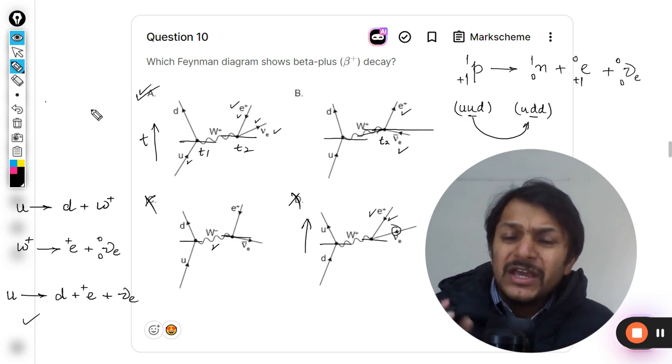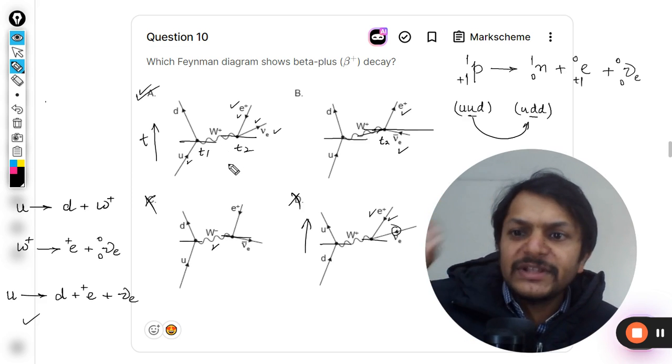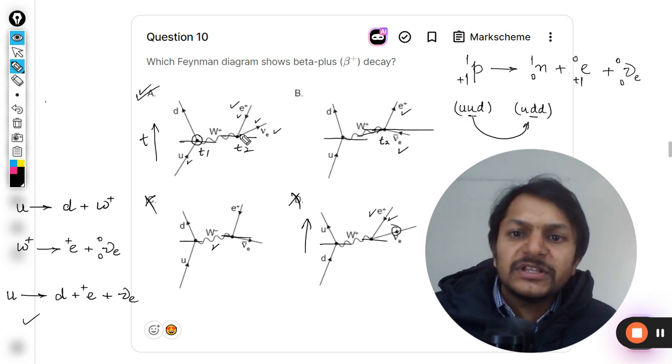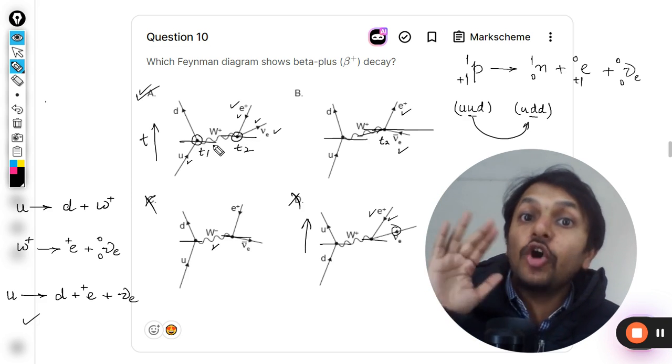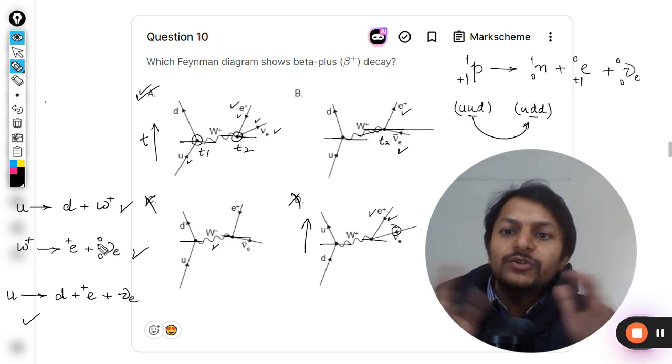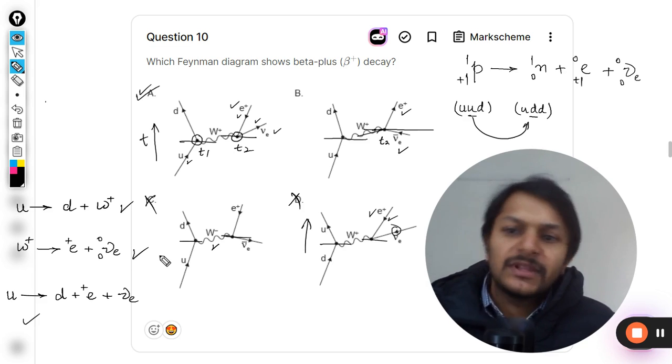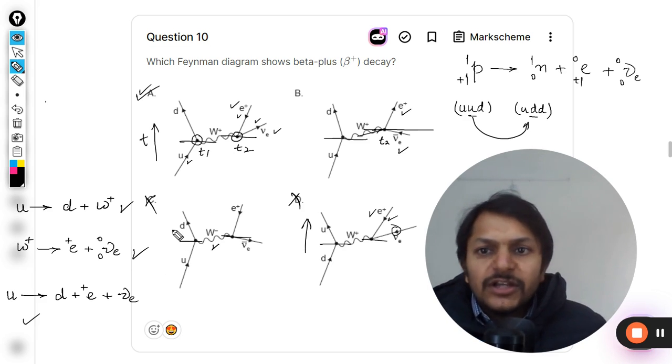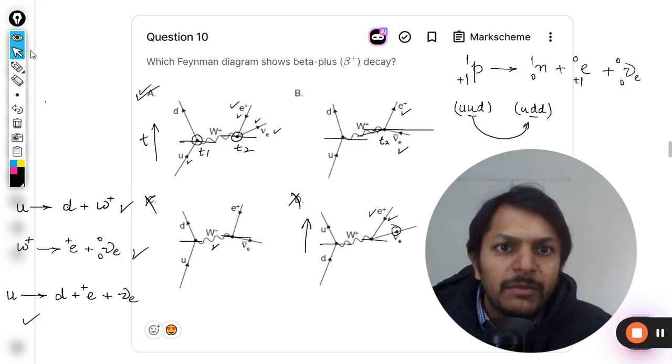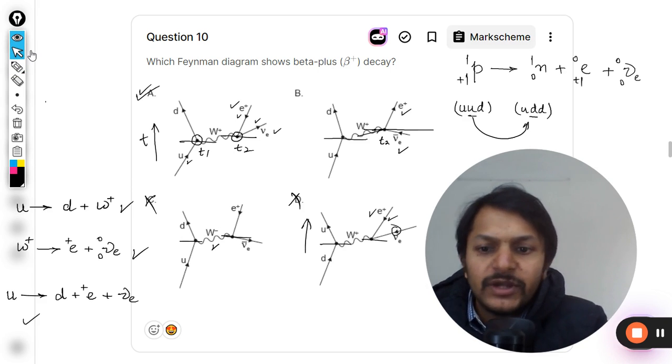I think it is pretty clear now. All the conservation principles will be valid at this junction and at this junction also. The charge will be conserved here also and here also. This is how we do this question. So your answer is A. Let us verify it from the mark scheme.